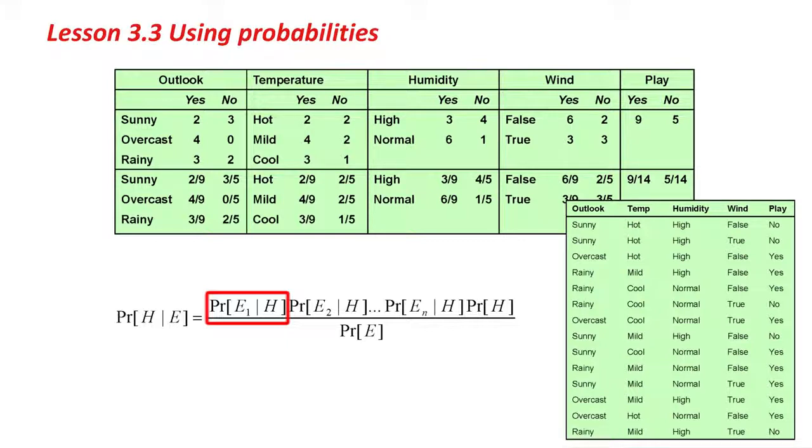The next attribute is temperature, and we just do the same thing with that to get the probabilities of the three values, hot, mild, and cool, under the Yes hypothesis or the No hypothesis. The same with humidity and windy. And play, that's the prior probability, PR. It's Yes, nine-fourteenths of the time, No, five-fourteenths of the time, even if you don't know anything about the attribute values. The equation we're looking at is this one below, and we just need to work it out.